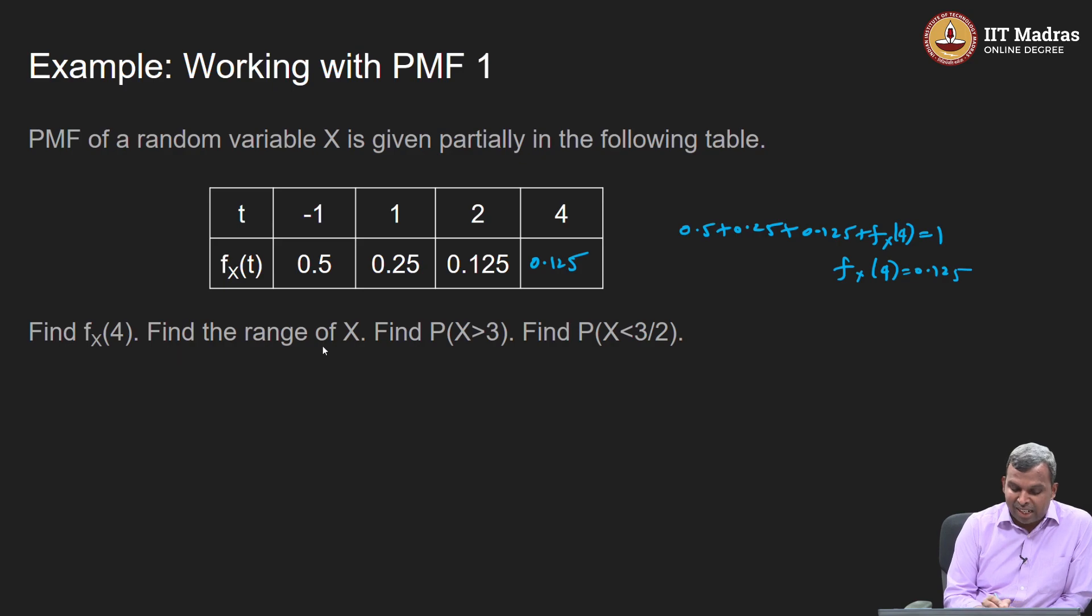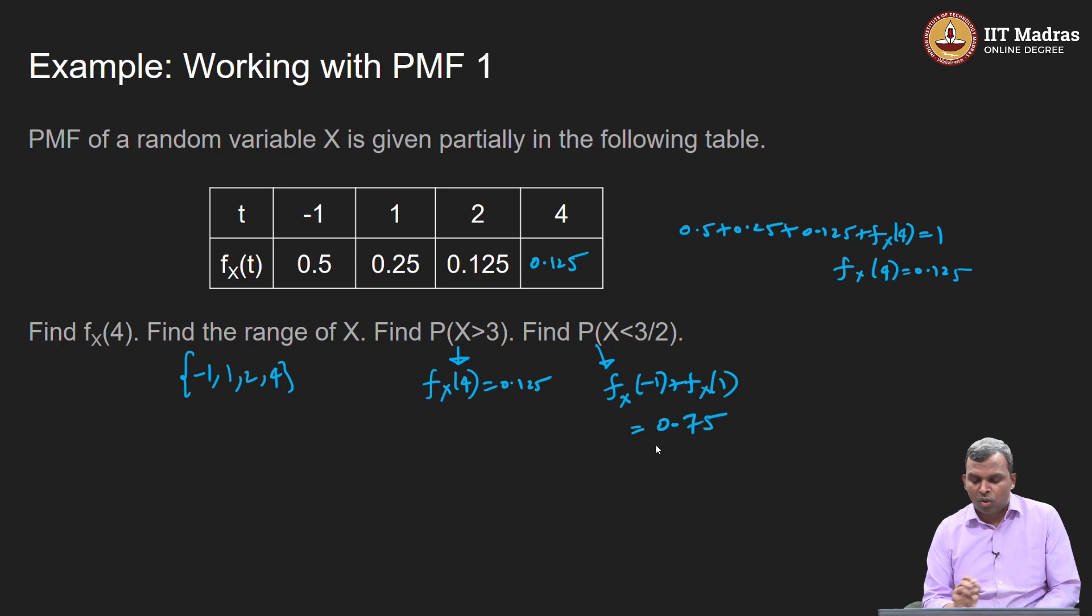Now, find the range of X. Why is the range given? For instance, 4 may work out to 0. If the probability is 0, usually you do not put it in the range. Maybe the range is 1, but in this case, every value is possible -1, 1, 2, 4. Probability that P of X greater than 3 is basically fx of 4. If X is greater than 3, 4 is the only possibility and that is 0.125. Probability that X is less than 3/2 is 1.5, it is fx of -1 plus fx of 1, that is 0.75. Notice how easy it is to work with PMFs. It is very easy to work with PMFs, very simple quantities and very basic algebra you can do. This is first example I am doing of working with PMF.